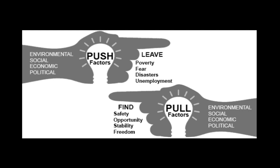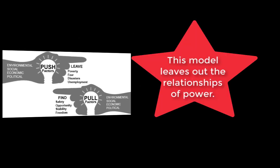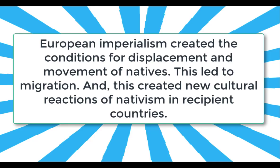But there's another thing we need to think about when we assess this push and pull model. The model tends to leave out the relationship of power between the European imperialist countries and the natives that they were impacting. European imperialism created a global marketplace in which native peoples were often displaced and looked for new labor within the European empire. This meant a massive movement towards new rural and urban centers, and a tension between migrants and nativists in the countries that received them.